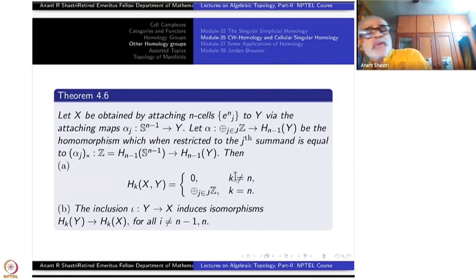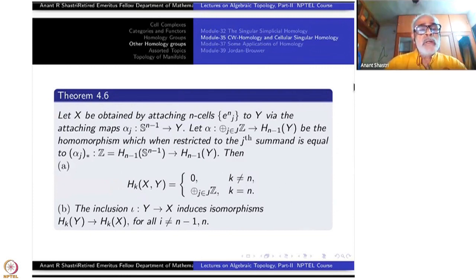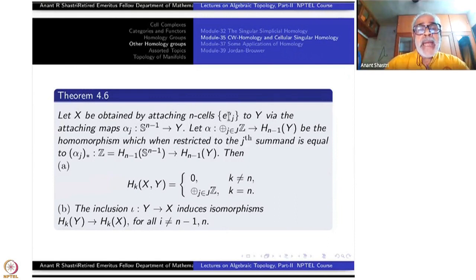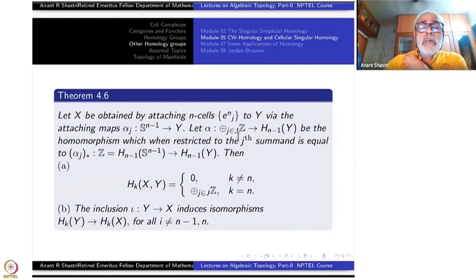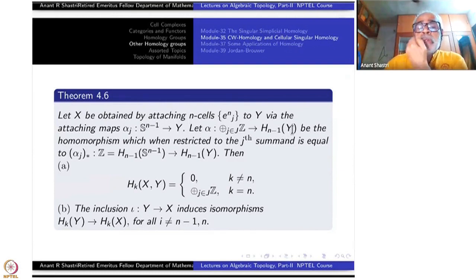Let X be obtained by attaching N-cells E_J to Y via attaching maps alpha_J, which are defined on the boundary of D^N to Y. Once you have this collection, define a homomorphism alpha from the direct sum of copies of Z — as many copies as the indexing set J — to H_{N-1}(Y).